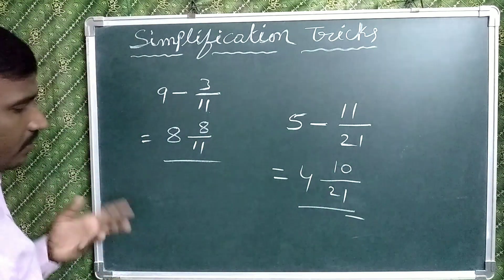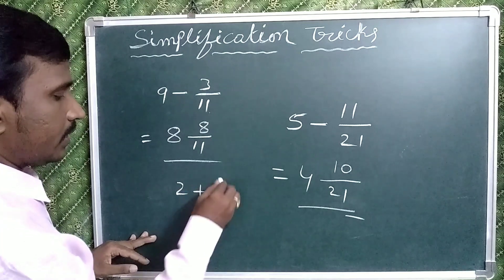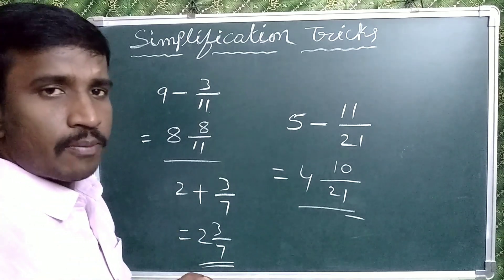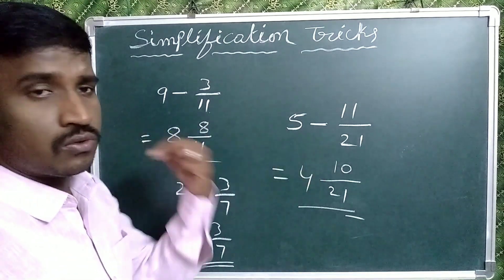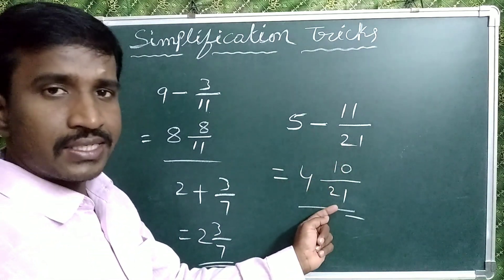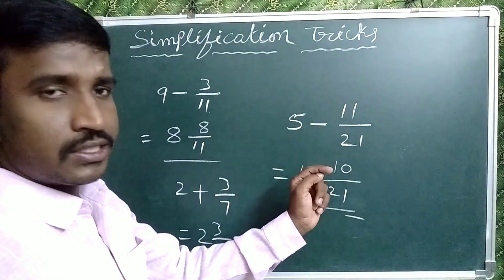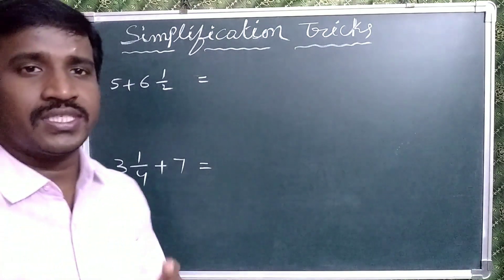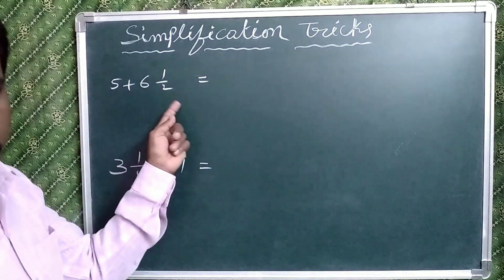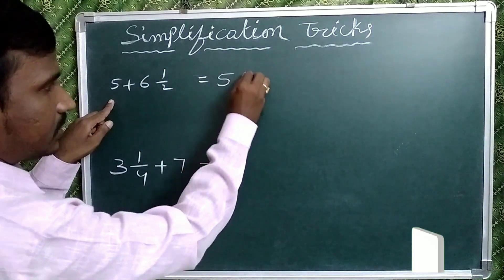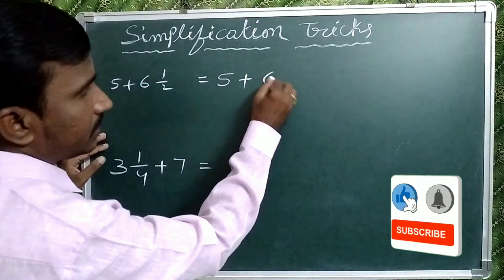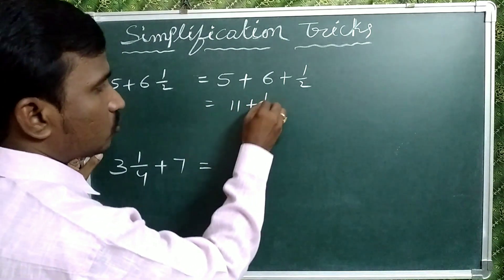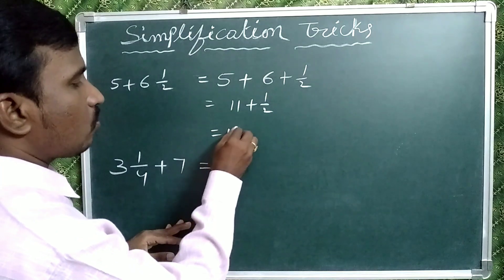So to summarize: in the case of positive, write directly — for example, 2 plus 3 by 7 means 2 and 3 by 7. In the case of negative, write the number before the whole number and keep the same denominator, but for the numerator write the difference of the denominator and numerator. Now suppose we are given 5 plus 6 and 1 by 2. This can be written as 5 plus 6 plus 1 by 2, which is 11 plus 1 by 2, giving us 11 and 1 by 2.